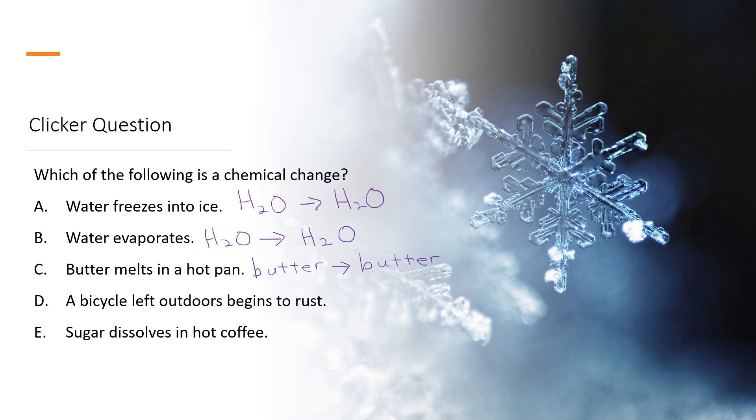If we have a bicycle left outdoors and it begins to rust somewhere there on the frame, well, that frame is steel, which is mostly iron. And as it rusts, it changes into rust. That rust is going to be chemicals like Fe2O3. It's picked up some oxygen and it's become brittle.